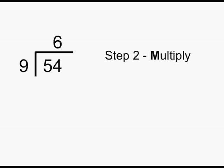Step 2 is to multiply. Sometimes students get confused over which numbers to multiply. It's a good idea to put your multiplication symbol right between the two outside numbers. That helps you to remember. 6 times 9 is 54. 54 goes underneath 54.